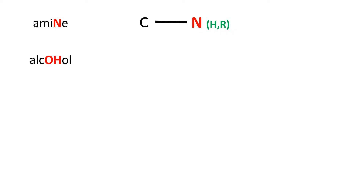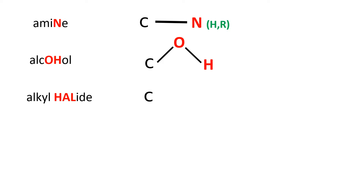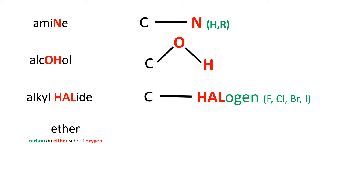Next is an alcohol. There's an O and H in alcohol — because when carbon is attached to an oxygen and a hydrogen, it makes an alcohol. The next one is alkyl halide. I bolded the letters H-A-L because a carbon that is attached to a halogen such as fluorine, chlorine, bromine, and iodine is an alkyl halide. Next is ether. Ether is very easy to remember because ether sounds like 'either' — so if you can remember that carbon on either side of oxygen is ether, then you've got it.